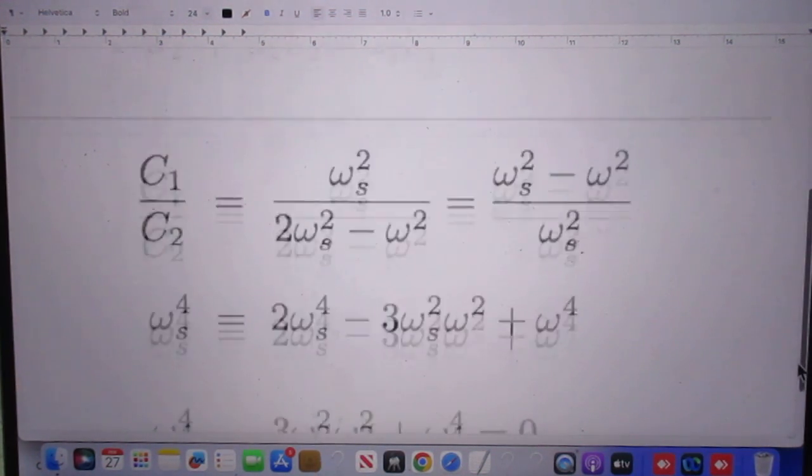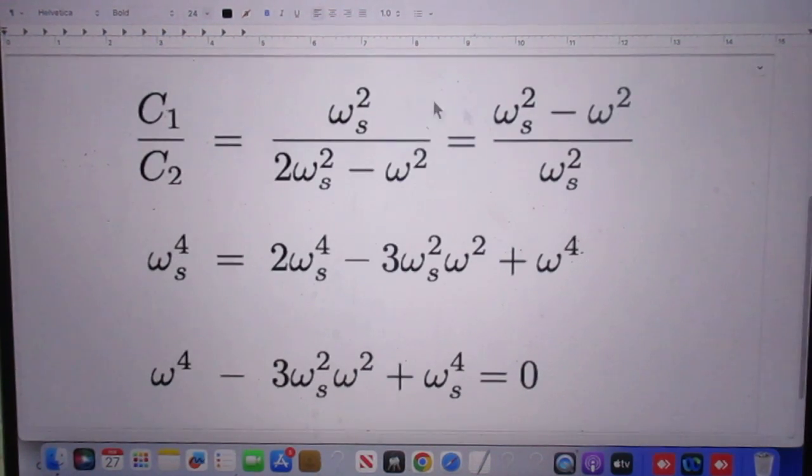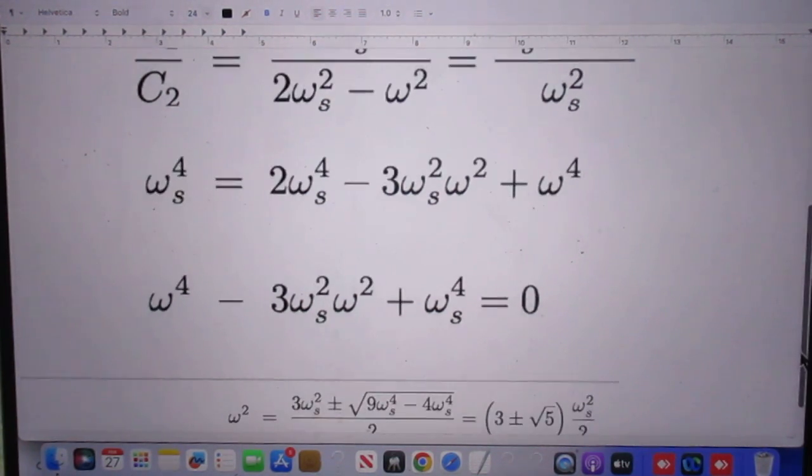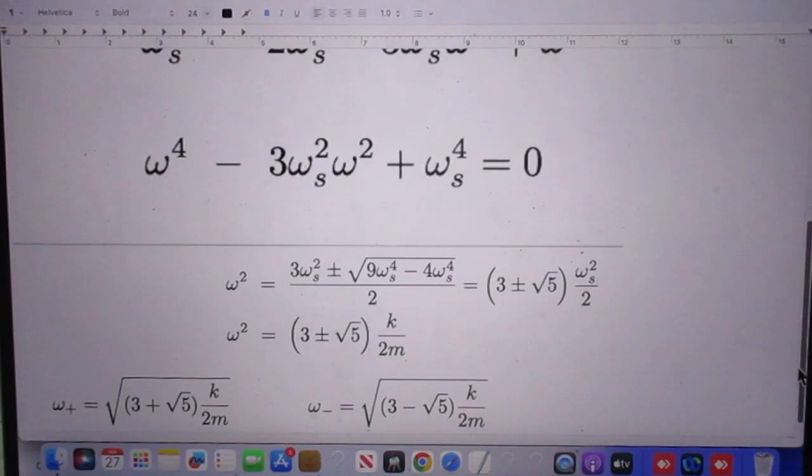If now, I rearrange these things a little bit. This goes here, and this goes there. Then I end up with an equation of omega to the fourth.